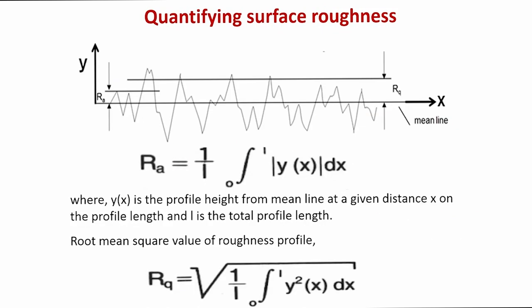The next question that should come to your mind is: if you say a surface is rough, how do you quantify the surface roughness? For the quantification of surface roughness, there are a host of parameters which are widely used in the field of tribology. Among them, the most commonly used parameter is Ra — Ra is the average surface roughness.